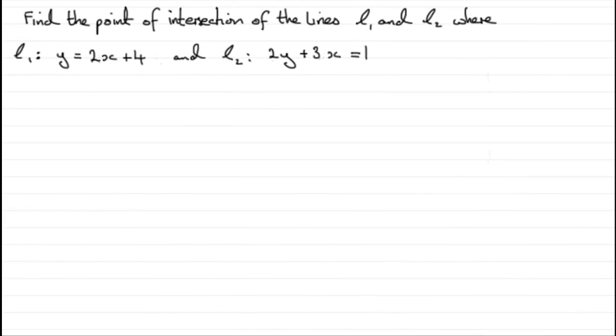Hi, welcome to this tutorial on finding the intersection of two lines. The best way I can illustrate this is by way of an example. Find the point of intersection of the lines L1 and L2 where L1 is such that y equals 2x plus 4 and L2 is such that 2y plus 3x equals 1.